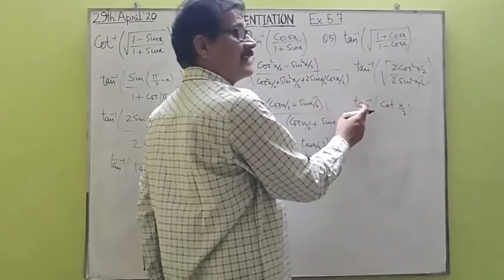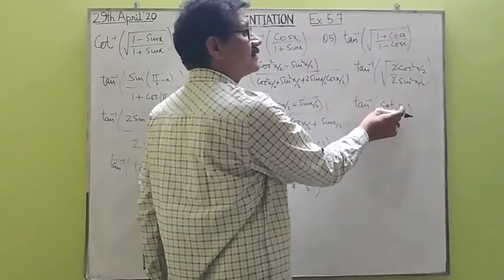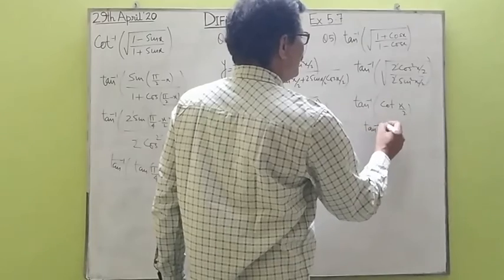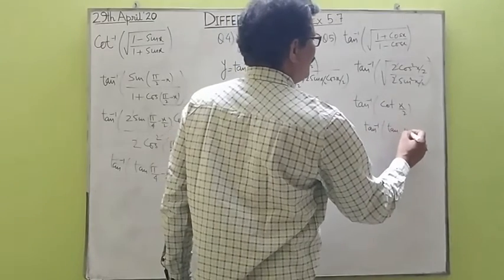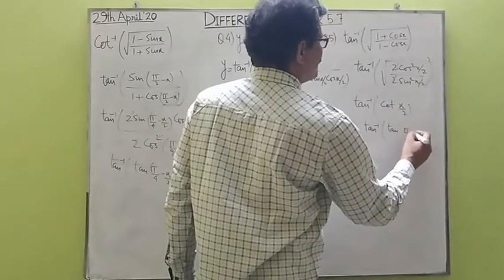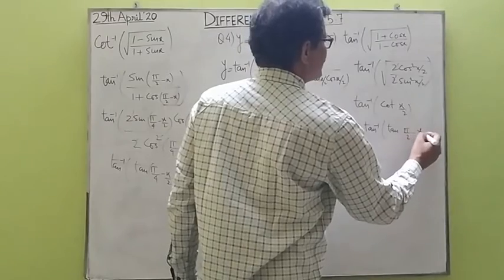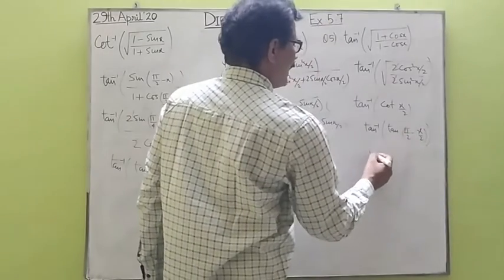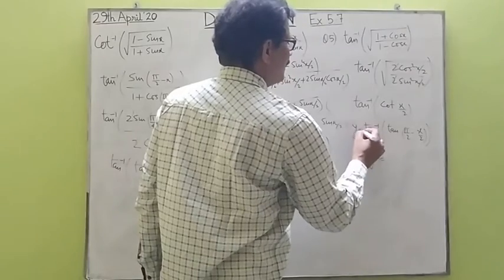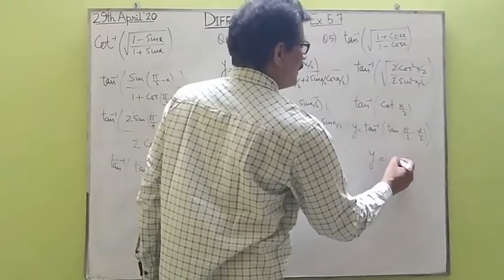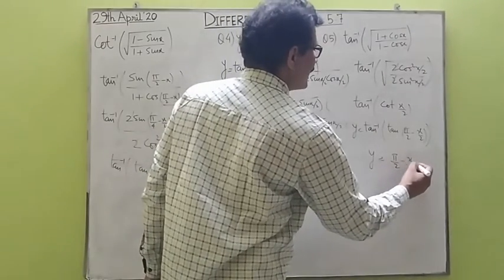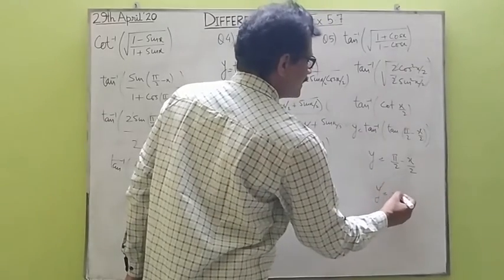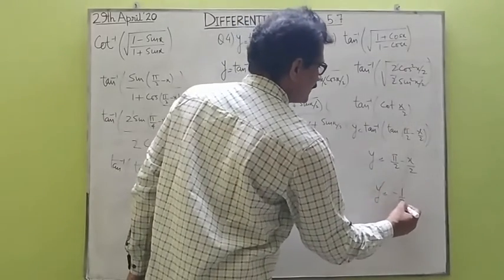Now cot(x/2) inside tan inverse — we have to change this to tan. We write it as tan inverse of tan(π/2 minus x/2). So y turns out to be π/2 minus x/2. When you find the derivative of this function, it turns out to be minus 1/2.